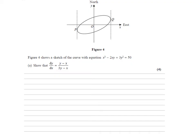Figure 4 shows a sketch of the curve with equation x squared minus 2xy plus 3y squared equals 50. Show that dy by dx equals y minus x over 3y minus x.